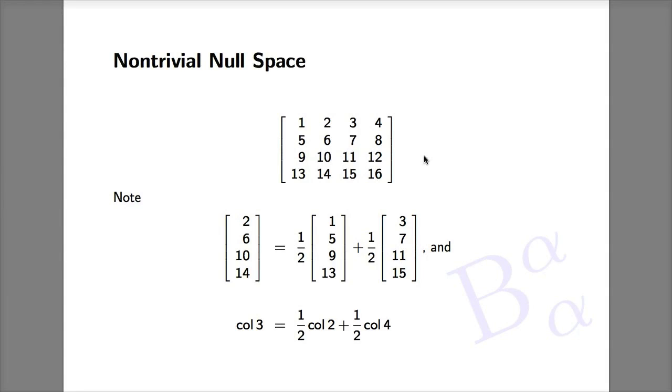Eigenvalue feature number three: non-trivial null space. Consider this matrix. Because of the special way in which the numbers are arranged, this matrix is singular. In other words, its columns are linearly dependent.